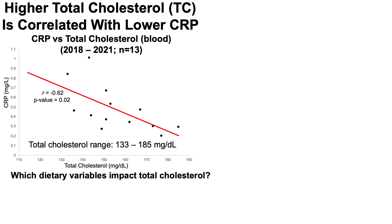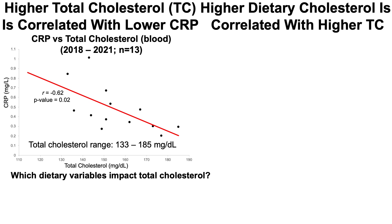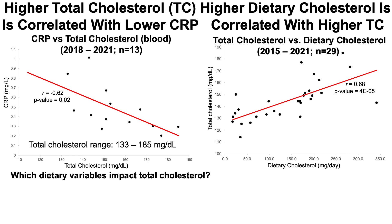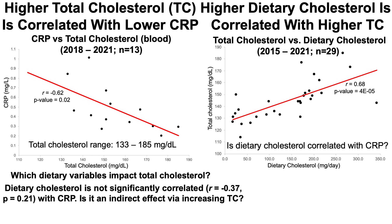When considering this association between my blood cholesterol levels and C-reactive protein, which dietary variables can impact total cholesterol? If I can use diet to increase cholesterol, then potentially I can reduce CRP. As mentioned, dietary cholesterol may be involved in this process — a higher dietary cholesterol intake is correlated with higher total cholesterol in my data. The higher my average dietary cholesterol intake, the higher my blood levels of cholesterol, and that's a significant correlation based on the p-value. Interestingly, dietary cholesterol is not significantly correlated with CRP directly, suggesting an indirect effect: more dietary cholesterol → more total cholesterol → through some mechanism, lower CRP.